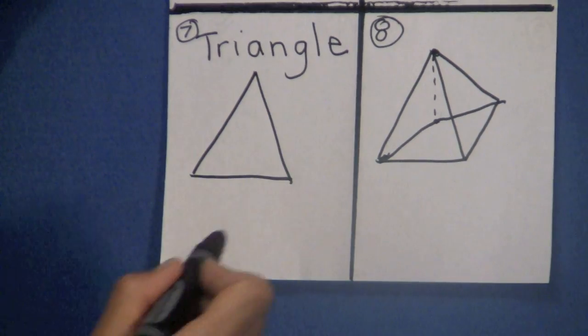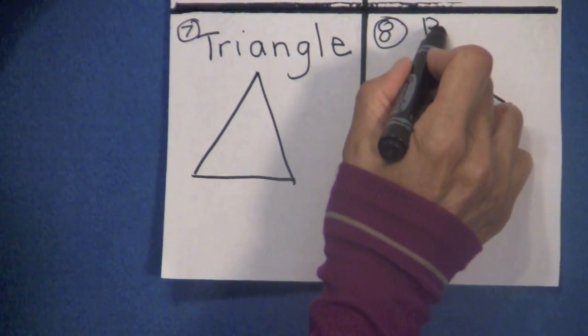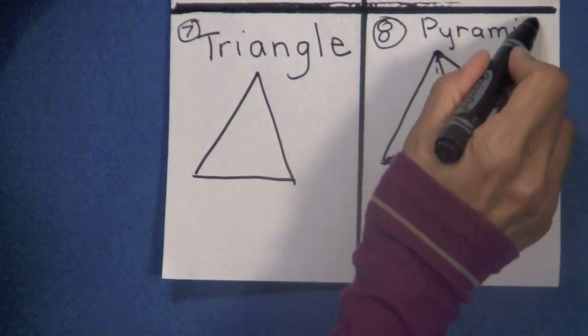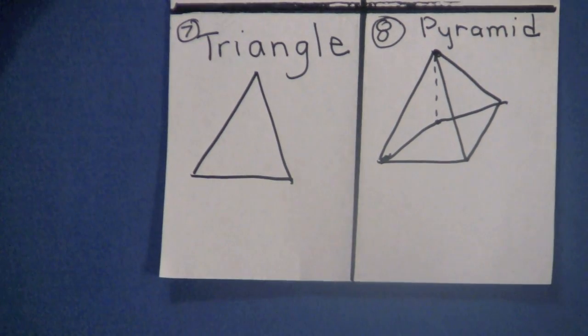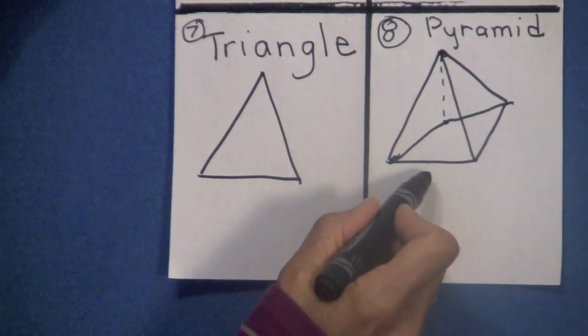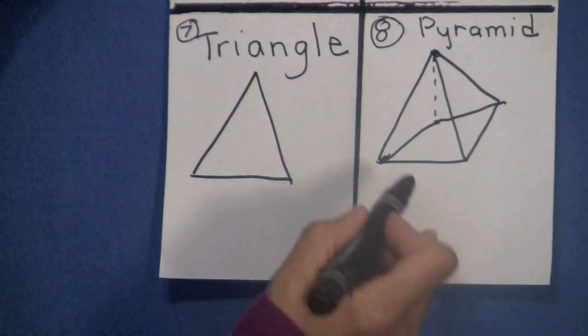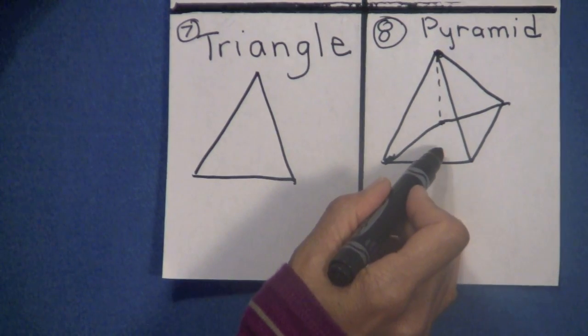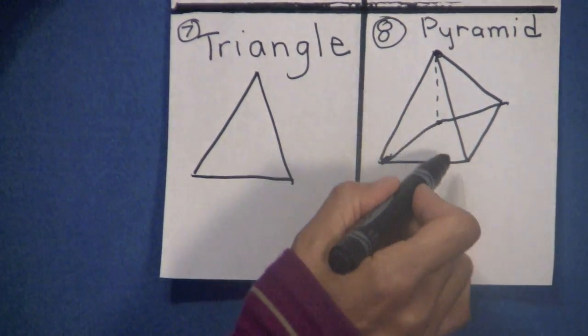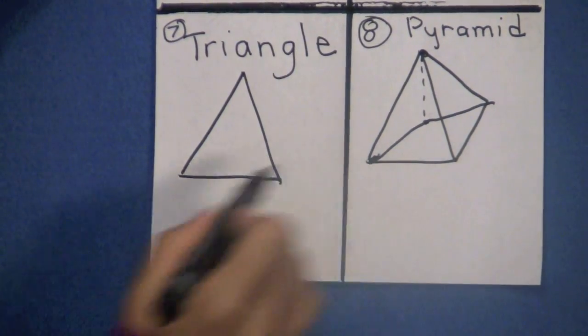We have a pyramid. Boys and girls, how do you spell pyramid? Capital P-Y-R-A-M-I-D. Pyramid. And a pyramid has another shape on the bottom. And this shape, mine isn't exactly perfect because I'm doing it freehand, but that should be a square. A pyramid is built with triangles and a square. The base of it is a square.